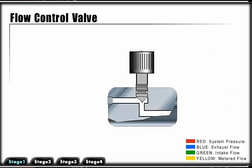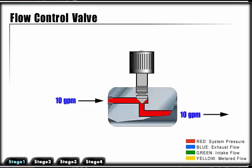The function of the flow control valve is to reduce the rate of flow in each leg of the circuit. Flow reduction will result in speed reduction at the actuator.